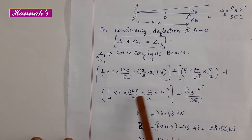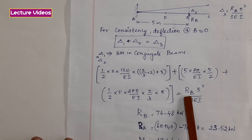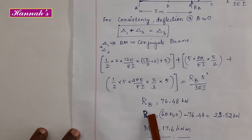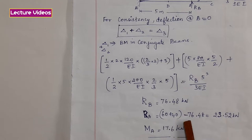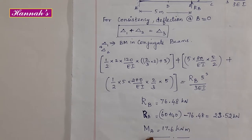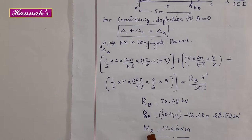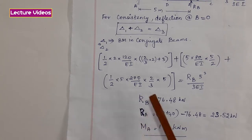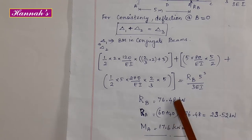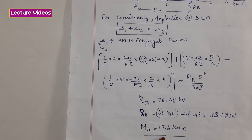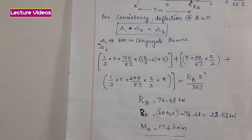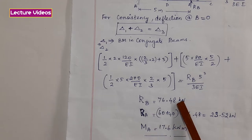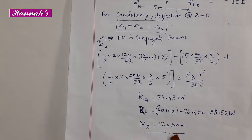From the consistency equation we get the value of RB. RA equals total vertical load minus RB. Finally, taking moments of all loads and reactions about A, we get the value of MA. So MA, RA, and RB are the reaction components. With these values we can draw the BMD and SFD. This was one method using the conjugate beam method.